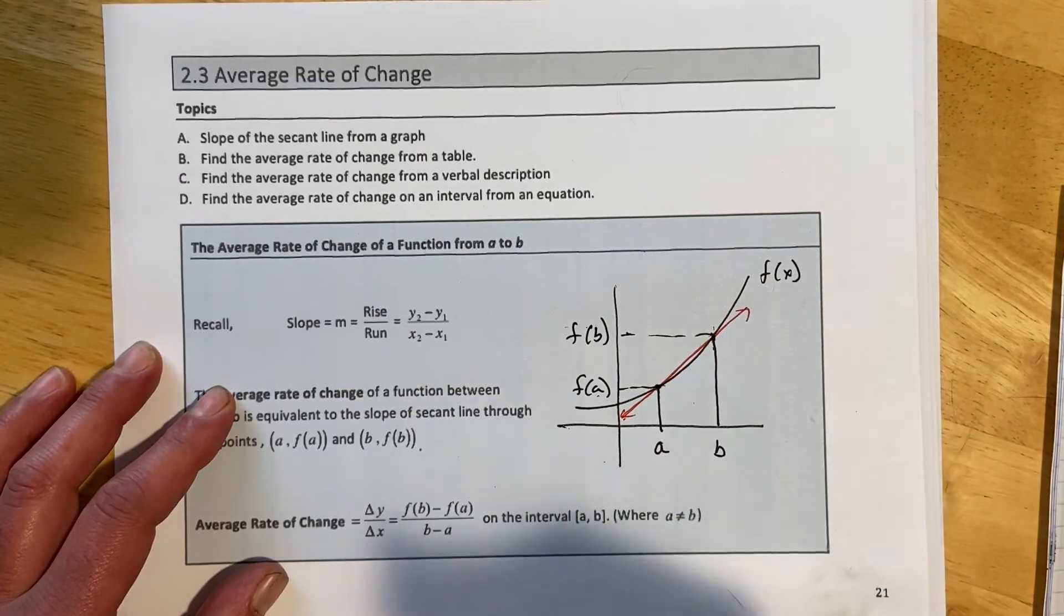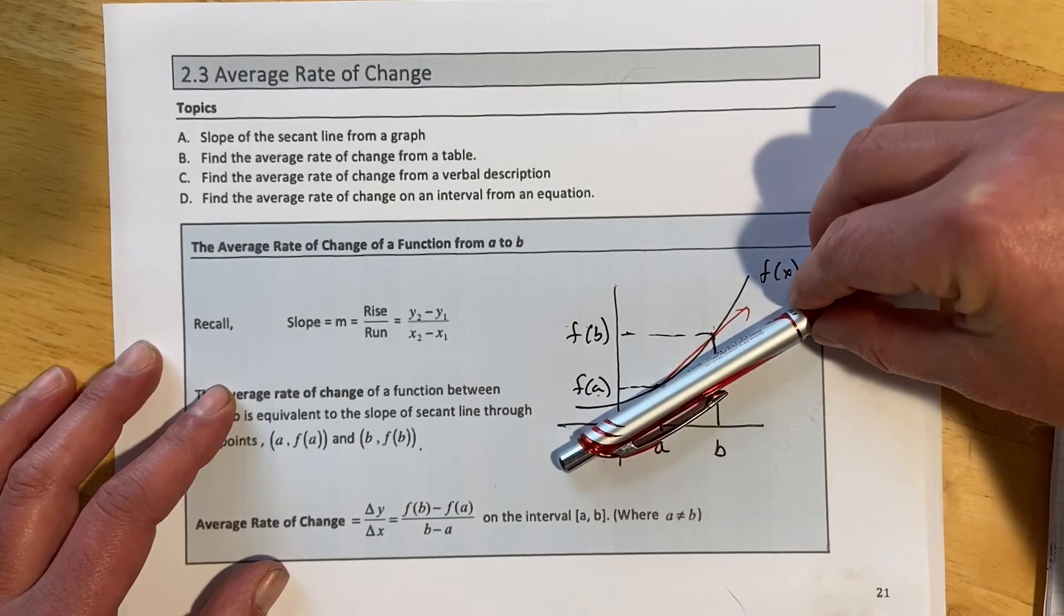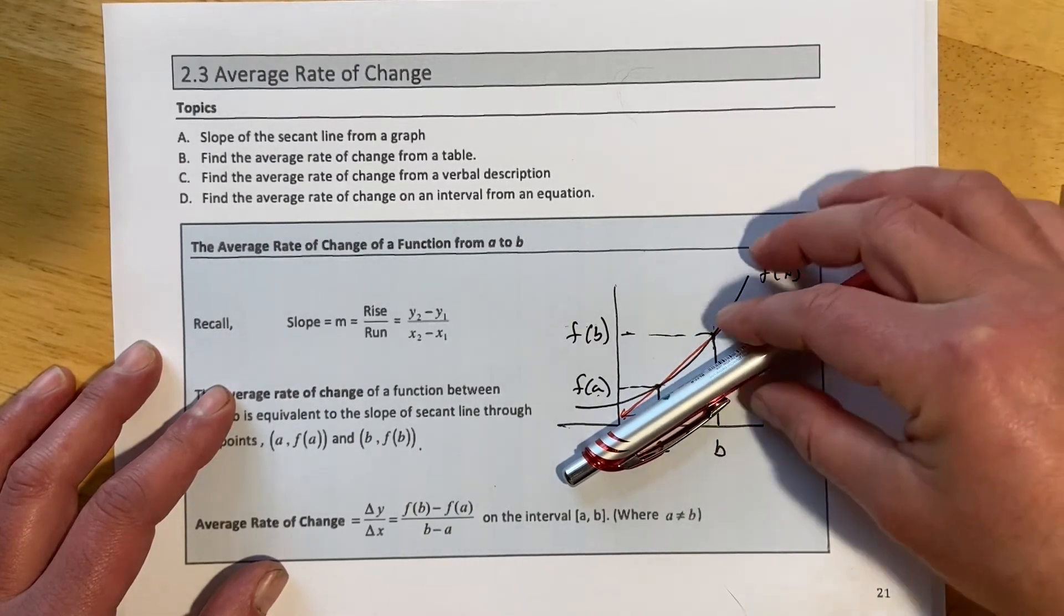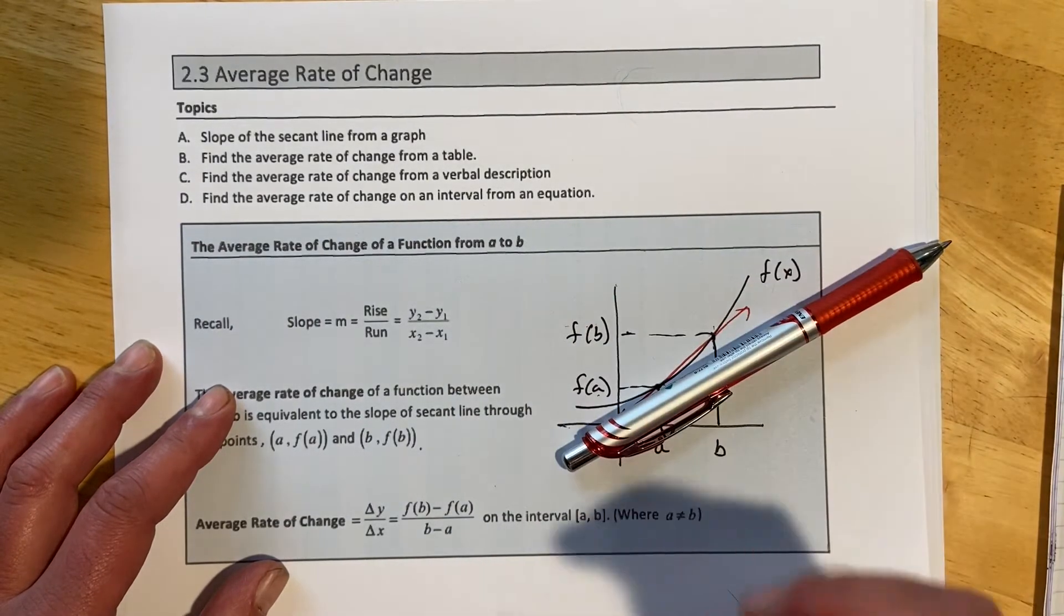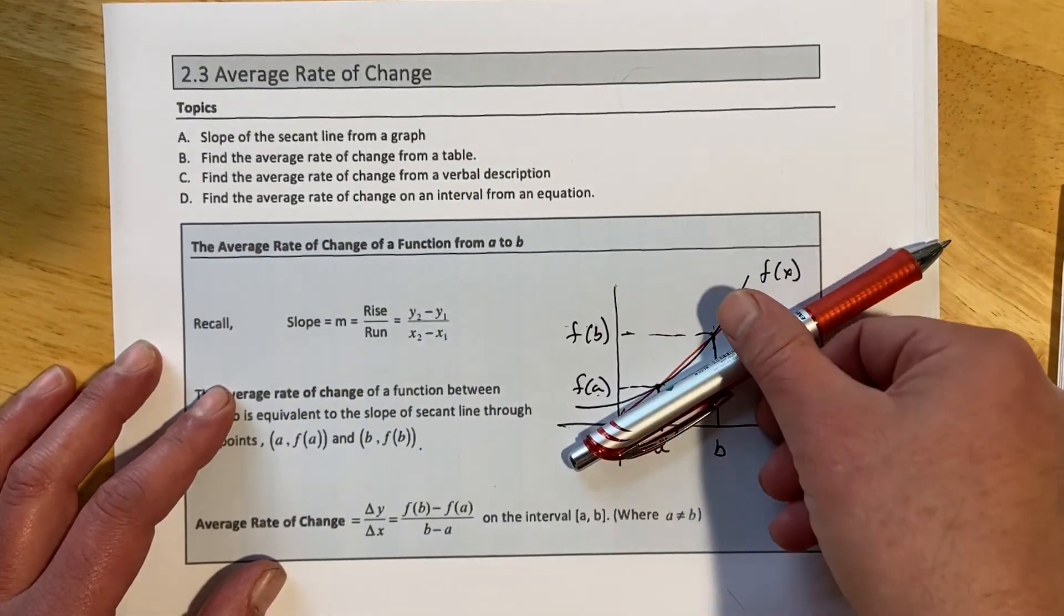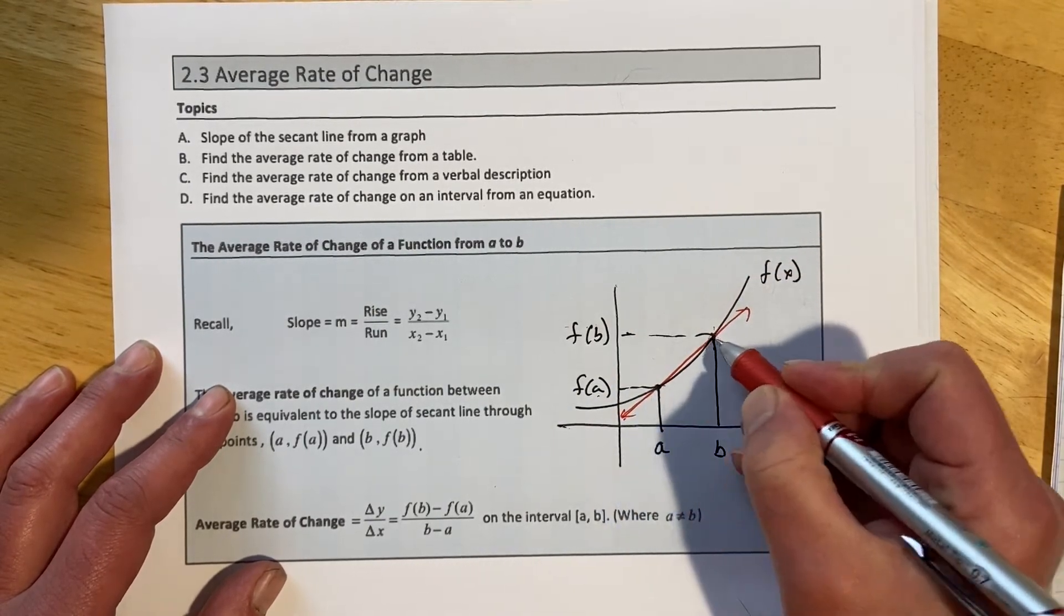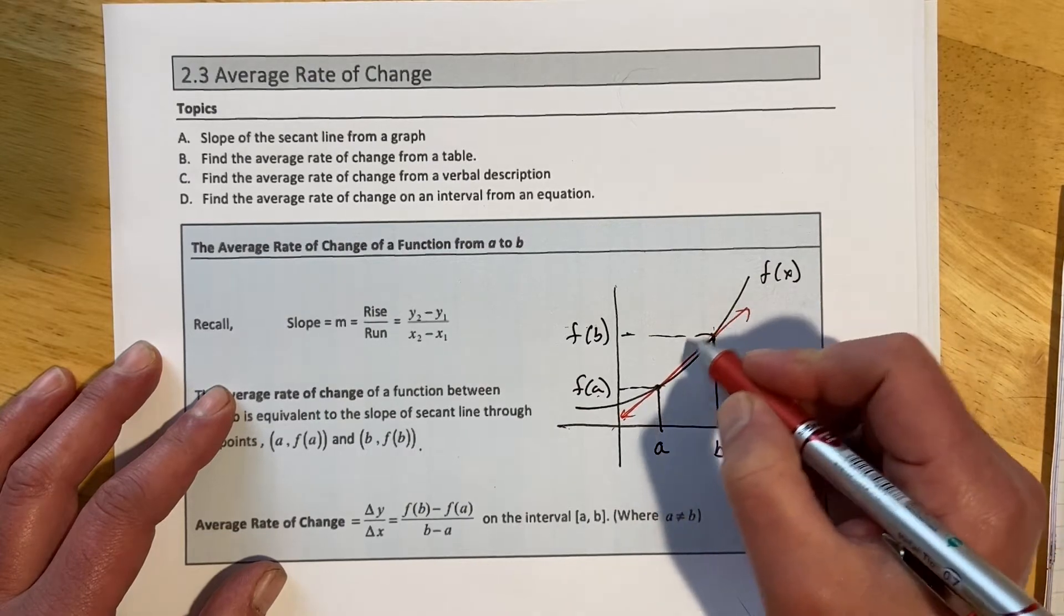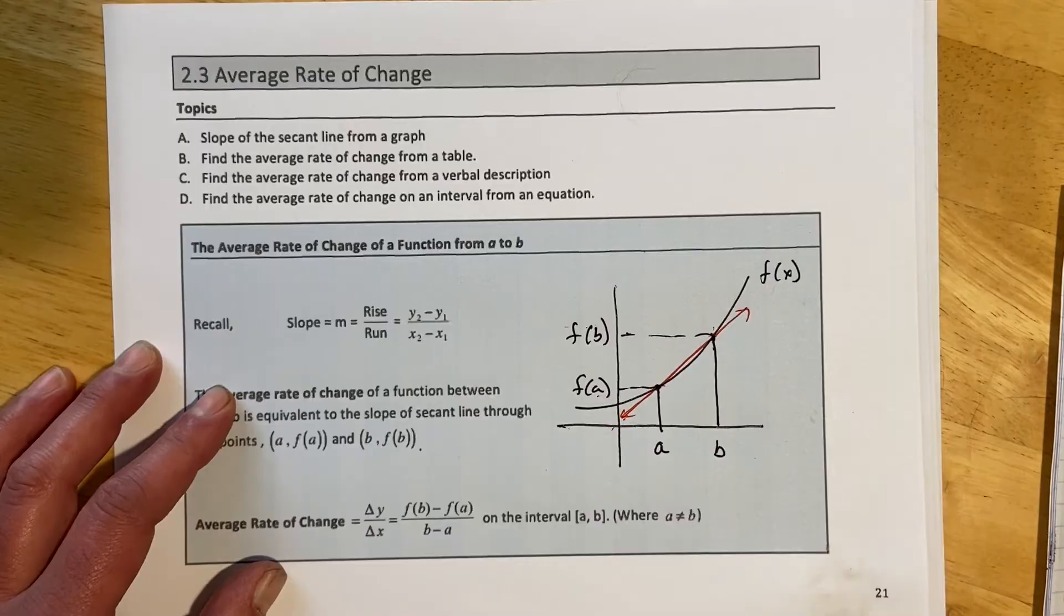And the instantaneous rate of change, if we were looking for that, and that's when this becomes calculus in a couple of quarters, would be what's called a tangent line. So it would be just tangent at that one single exact point. What the average is doing is giving us a starting point and an ending point. But all kinds of different things are happening in between.